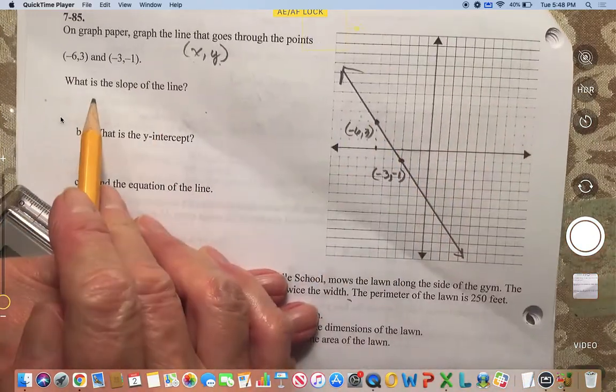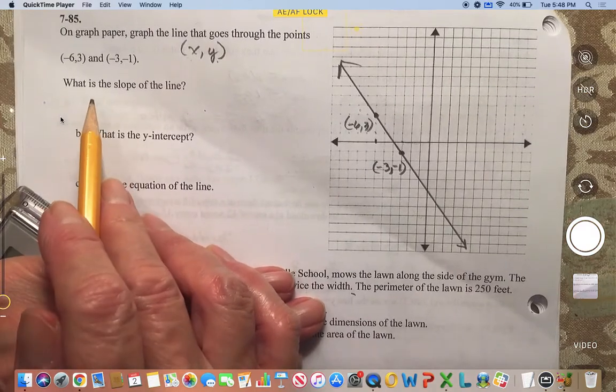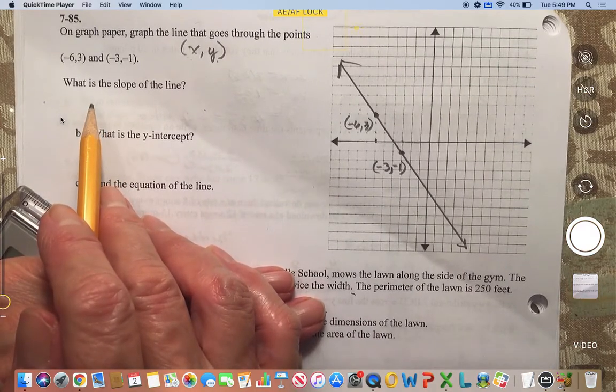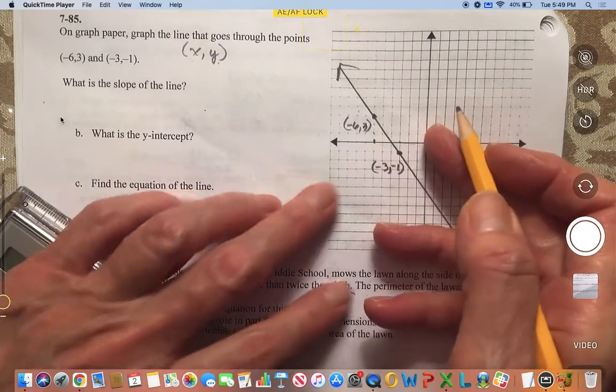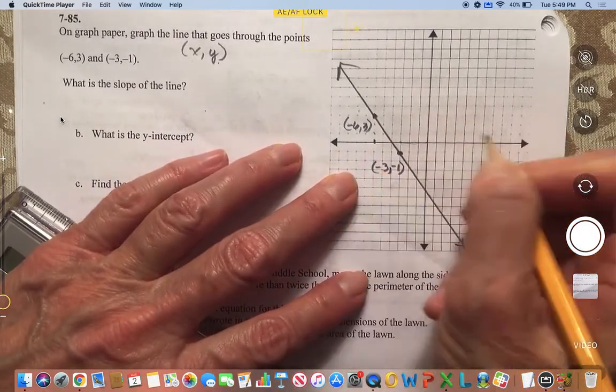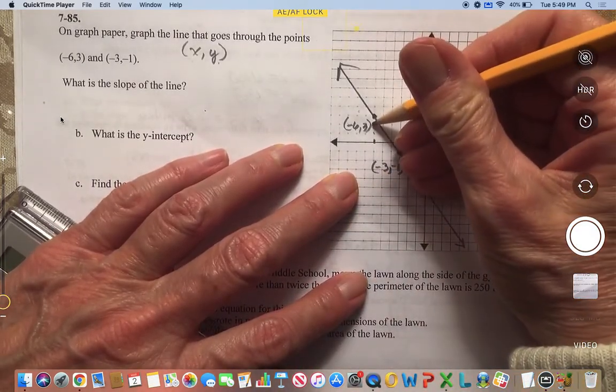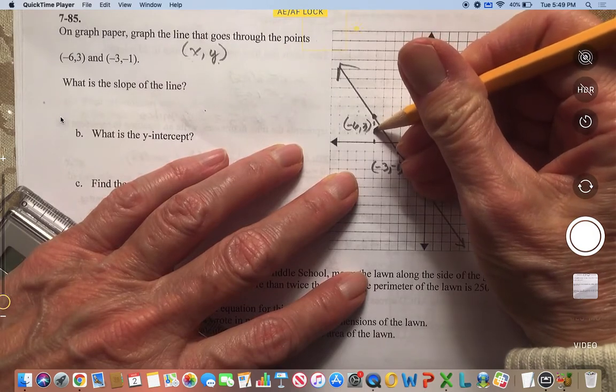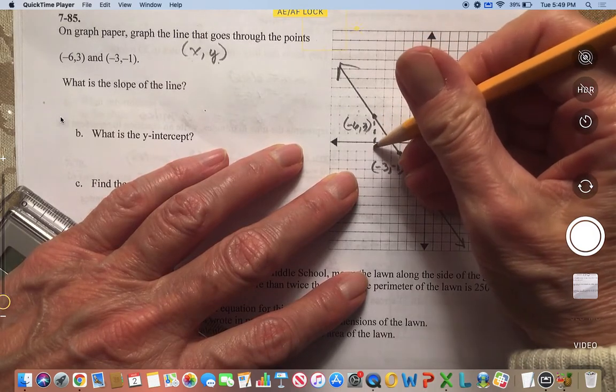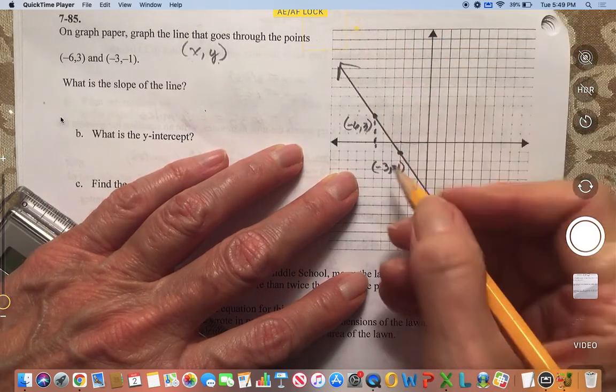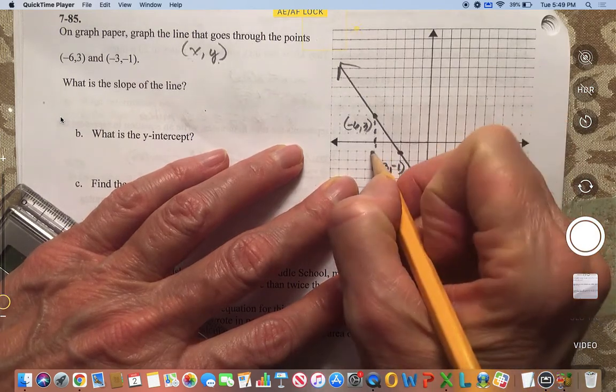And the first question that we have to answer is what is the slope of the line? So to find the slope, we're going to have to do a slope triangle. And I think I'm just going to do a slope triangle between these two points because it's easy. I know exactly where these points are.